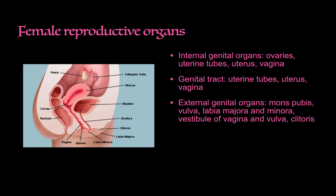Welcome back. Today we'll be going through the histology of the ovaries. The ovaries lie in the pelvic cavity and are part of the internal genital organs, which include the ovaries, the uterine tubes, the uterus, and the vagina. The external genital organs include the labia majora and minora, the mons pubis, the vulva, the vestibule — essentially the opening of the vagina — and the clitoris.